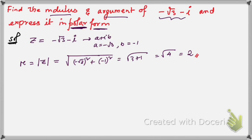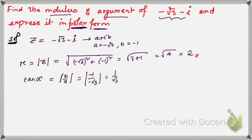Now let's find the argument. First we find tan α, which equals |b/a|. Here b = -1 and a = -√3, so |b/a| = 1/√3. We know that tan(π/6) = 1/√3, so α = π/6.